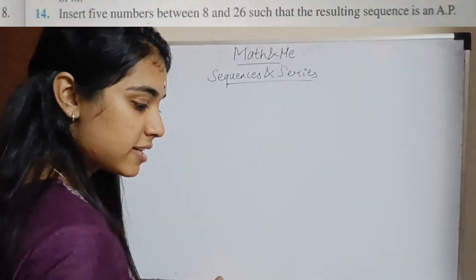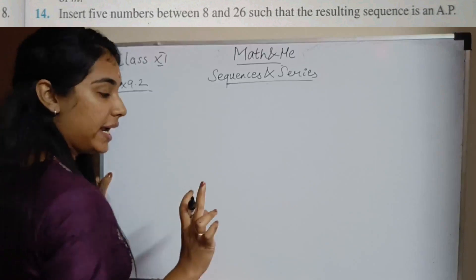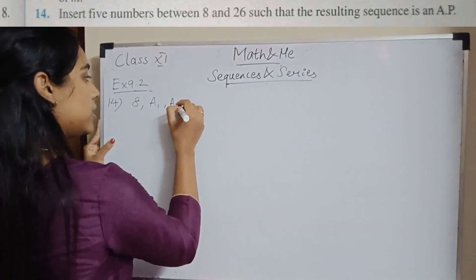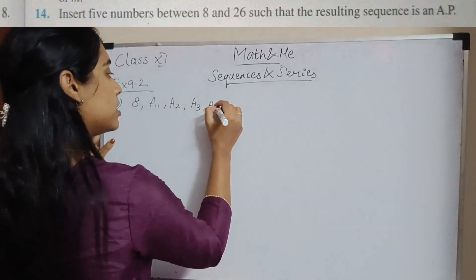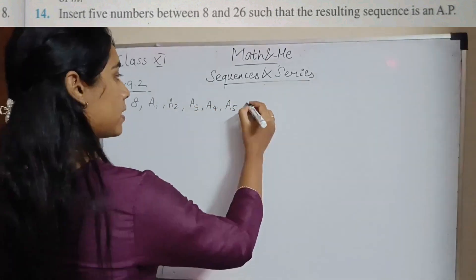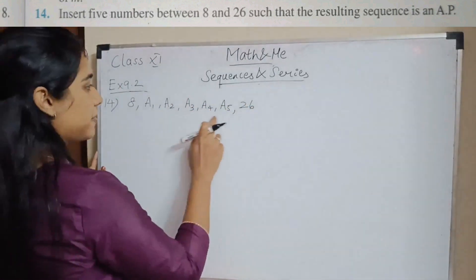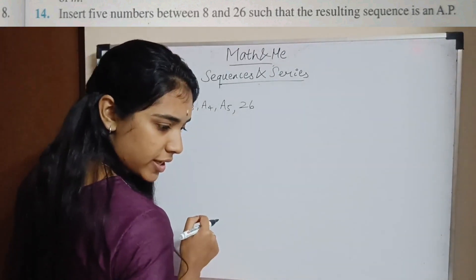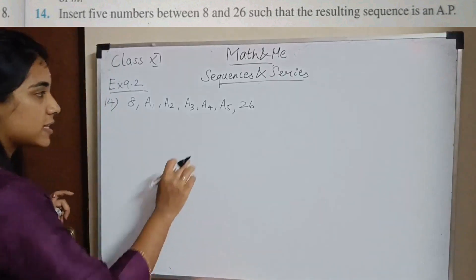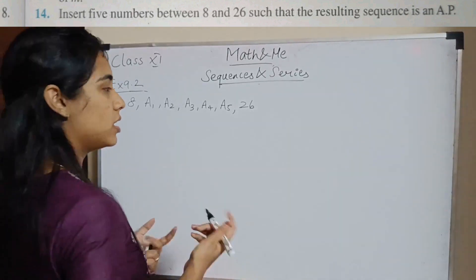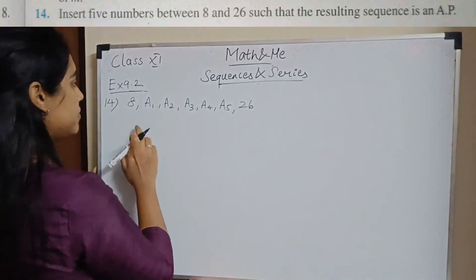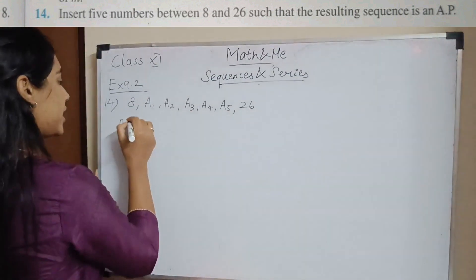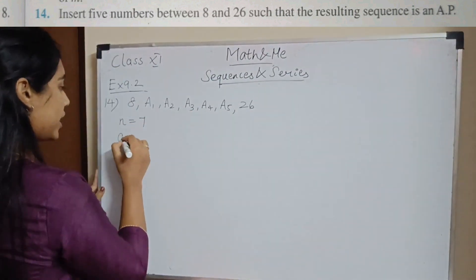Question number 14: insert 5 numbers between 8 and 26 such that the resulting sequence is an AP. You need: 8, A1, A2, A3, A4, A5, 26. This is the concept of arithmetic means. How many terms do you have? You have 7 terms, so n = 7, a = 8, and a_n = 26.